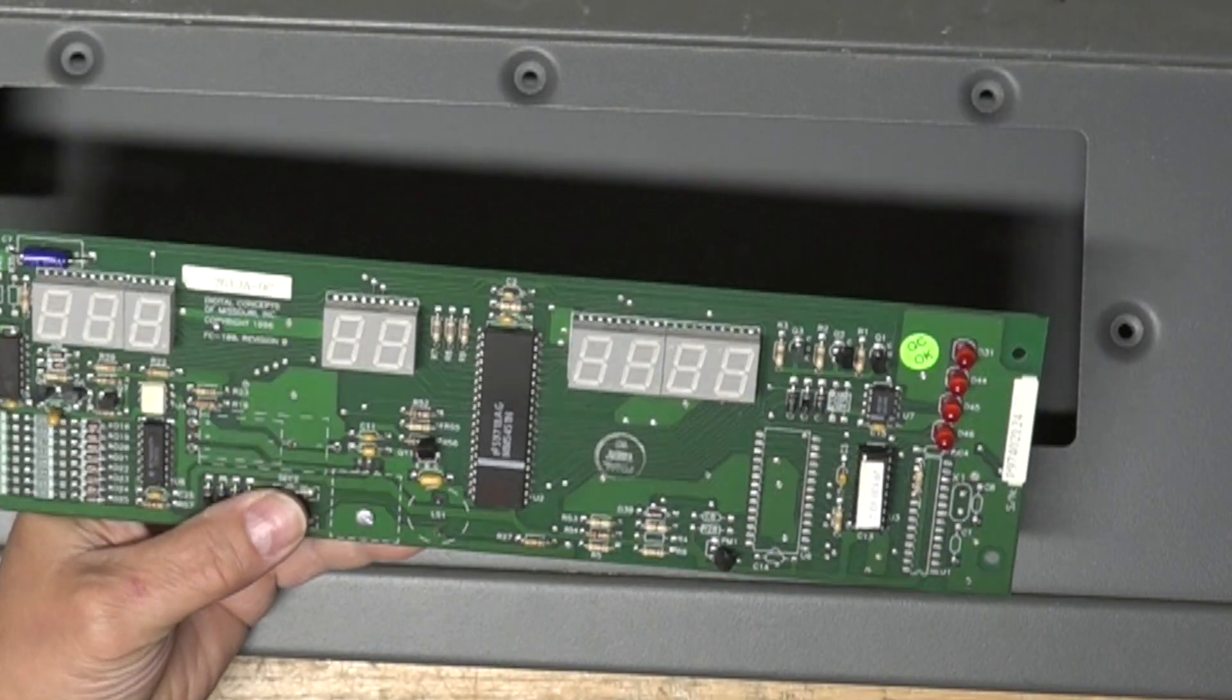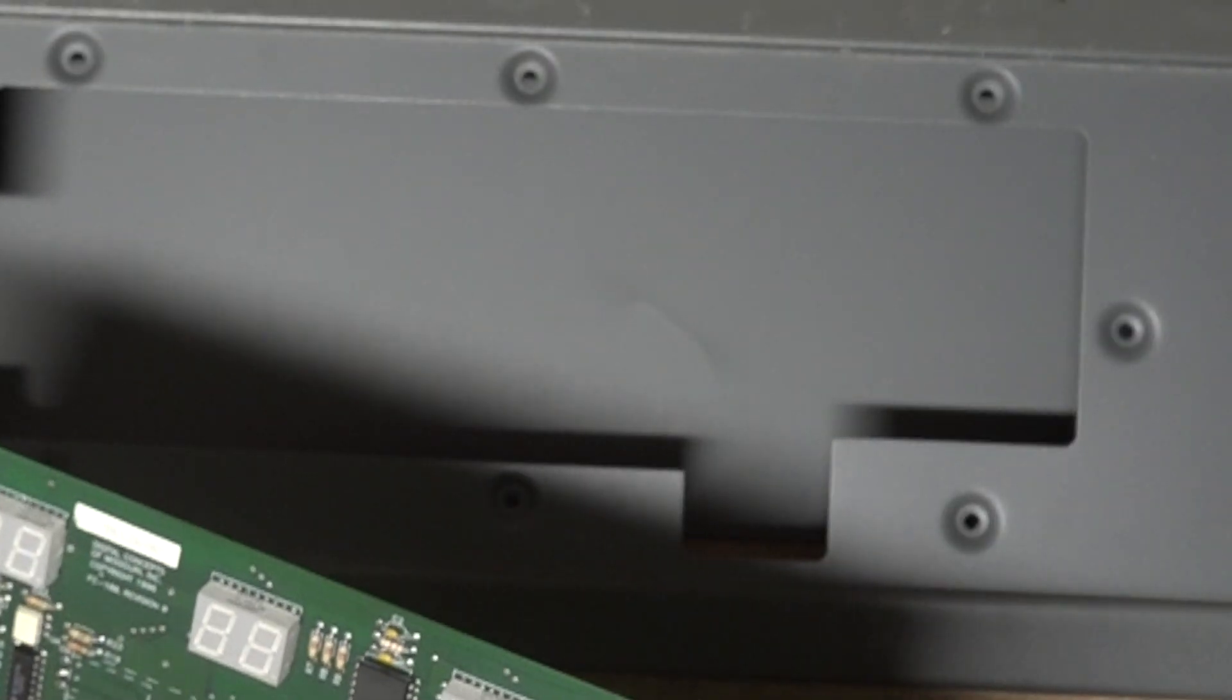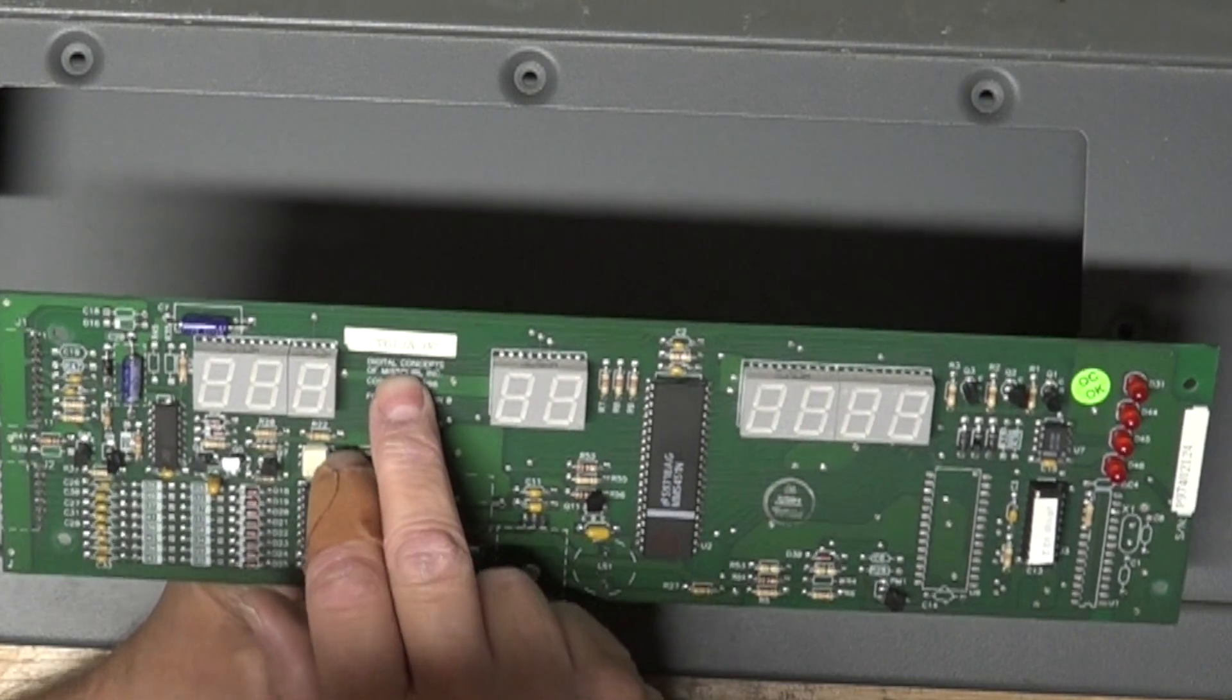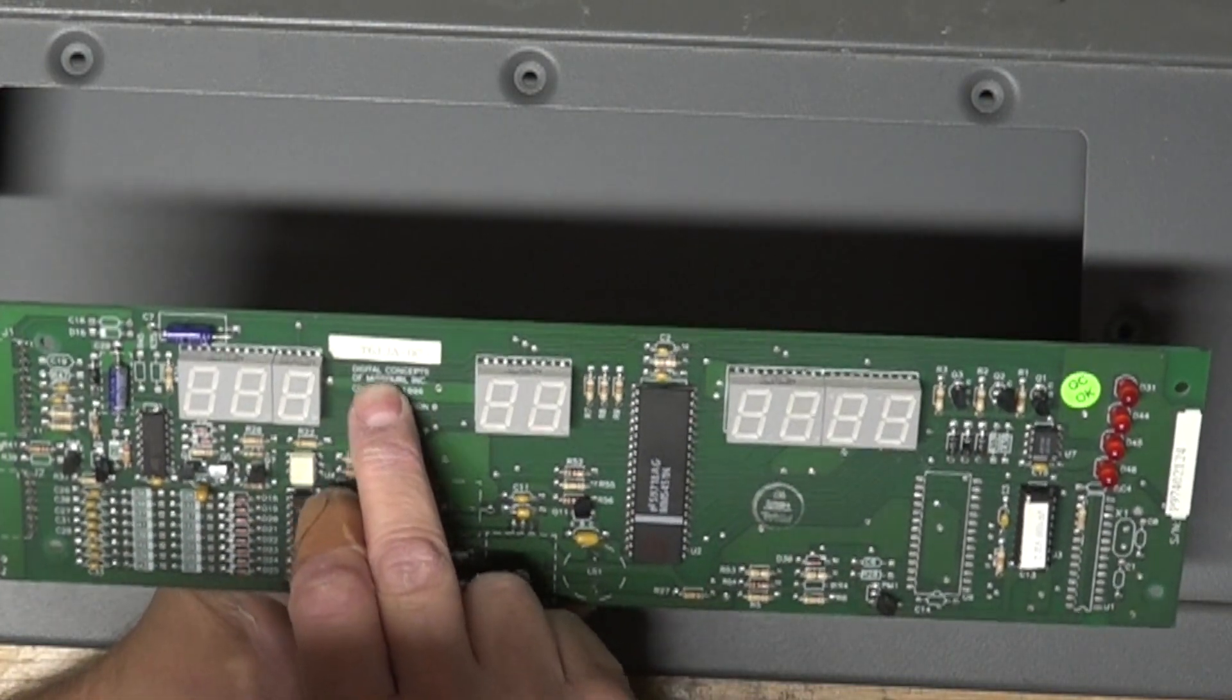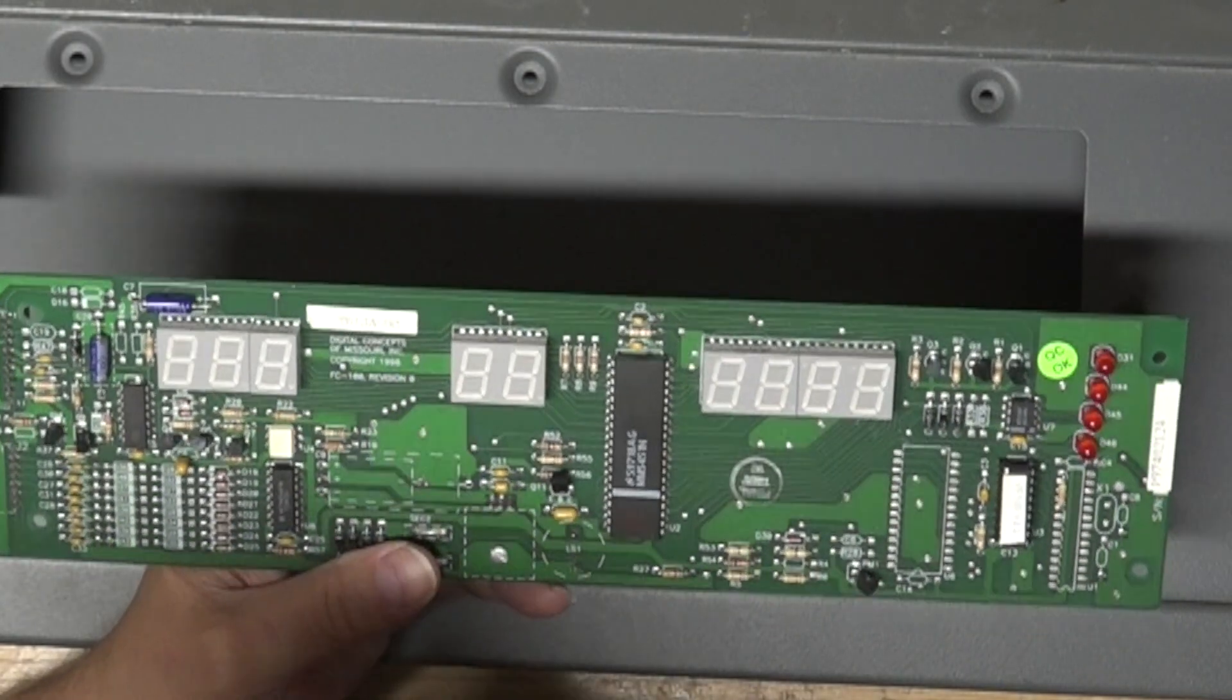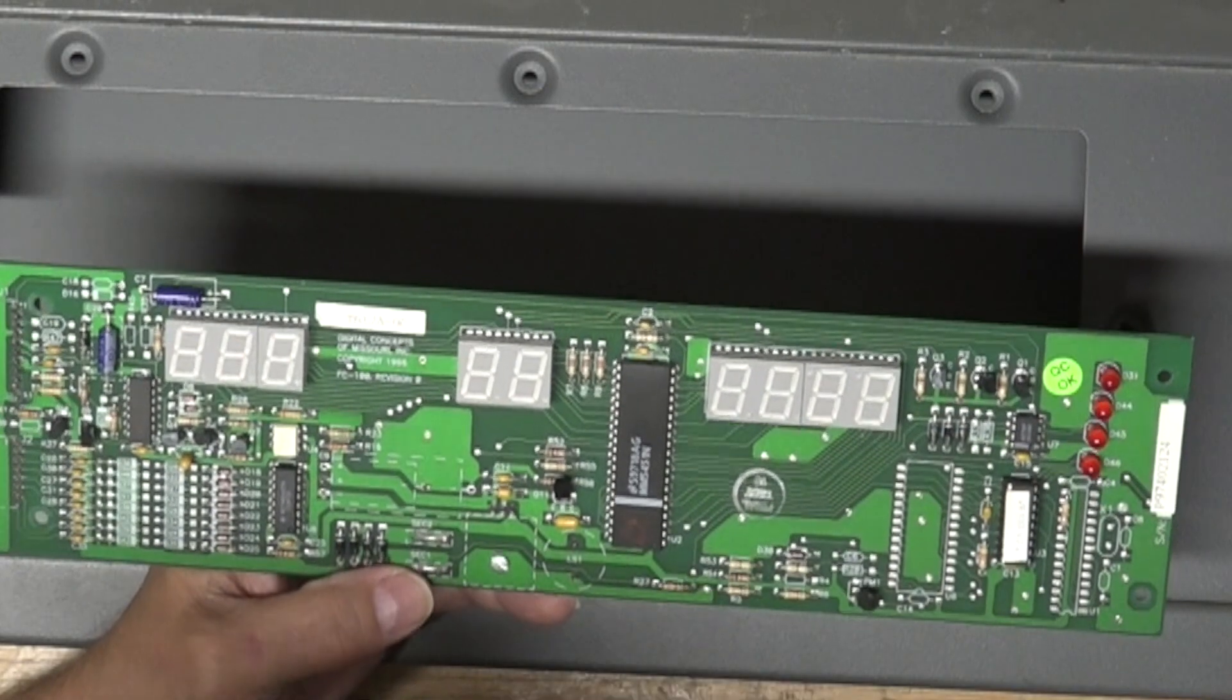So underneath there was attached this. Let me flip her around here. This is probably a processor. It's got a date of, I think I saw 1998 on here someplace. In fact, the physical traces are Digital Concepts of Missouri Inc. Copyright 1996 FC100 Revision Zero.